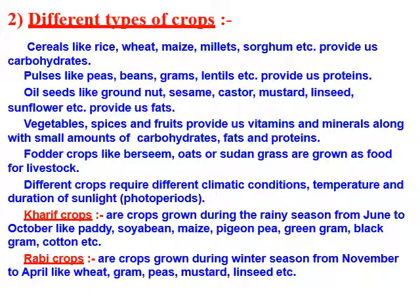On the basis of climatic conditions, crops are classified into two major categories. One is Kharif crops and the other is Rabi crops. Kharif crops are crops grown during the rainy season, sown in June and harvested in October. Some examples are paddy or rice, soya bean, maize, pigeon pea, green gram, black gram, and cotton.